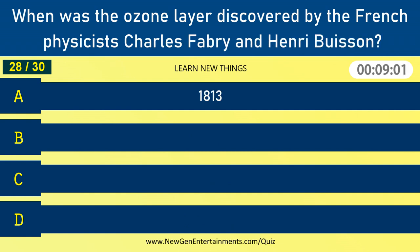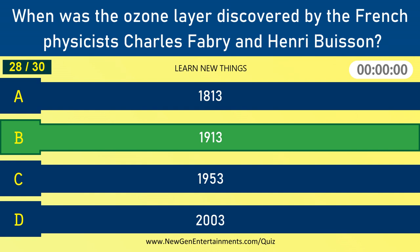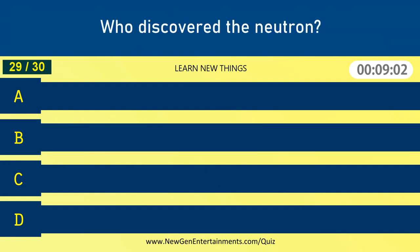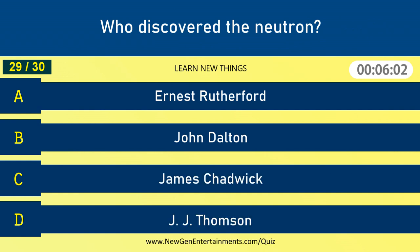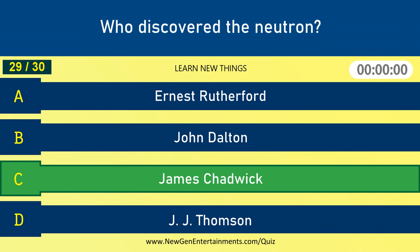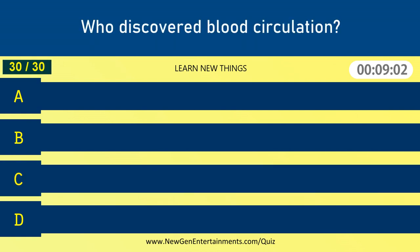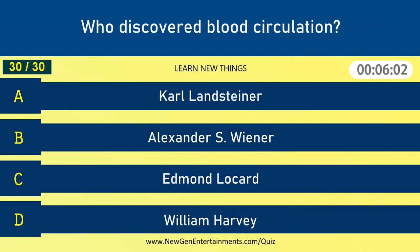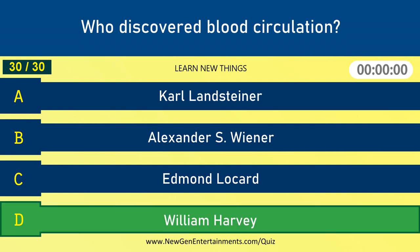When was the ozone layer discovered by the French physicist Charles Fabry and Henry Buisson? 1913. Who discovered the neutron? James Chadwick. Who discovered blood circulation? William Harvey.